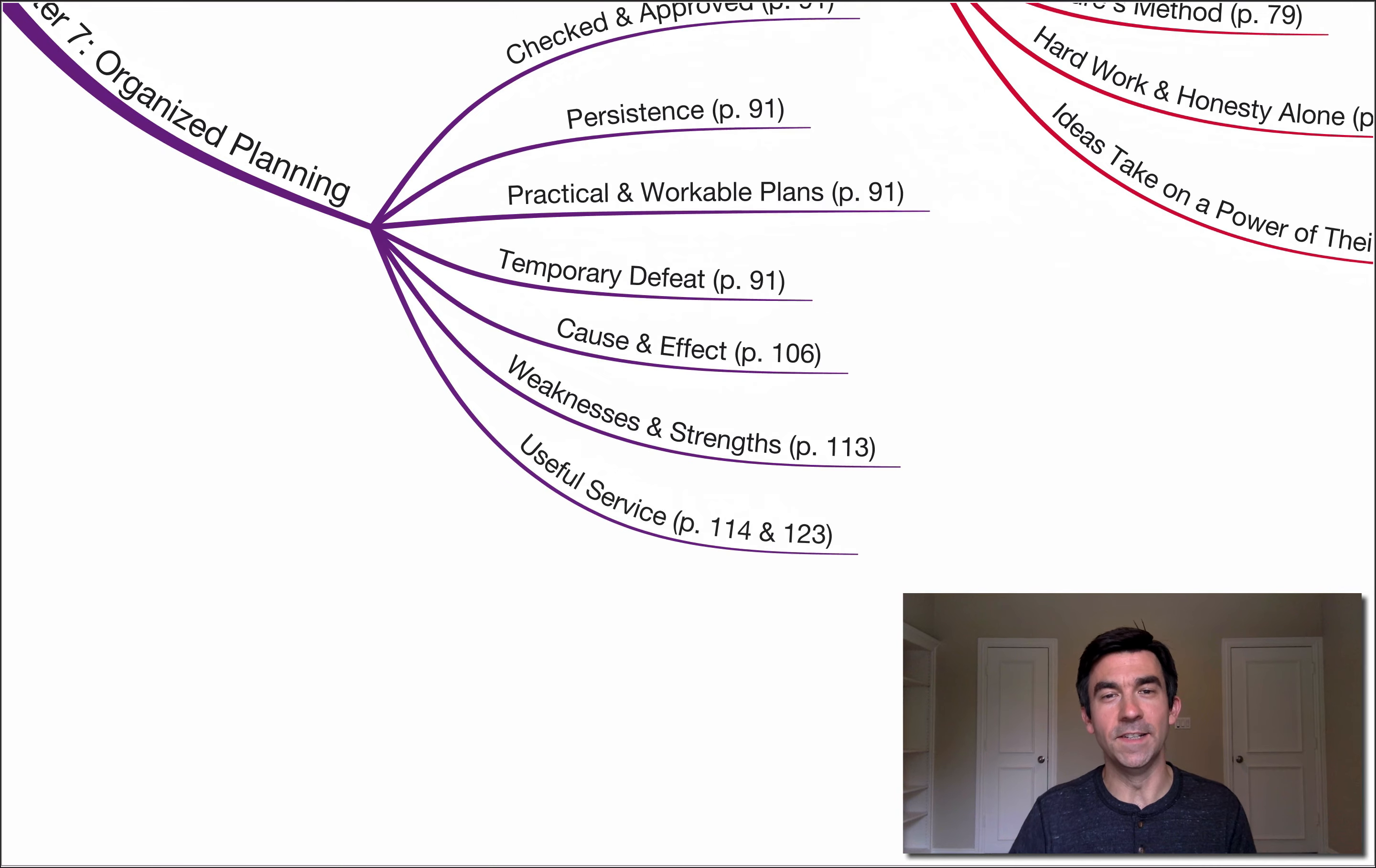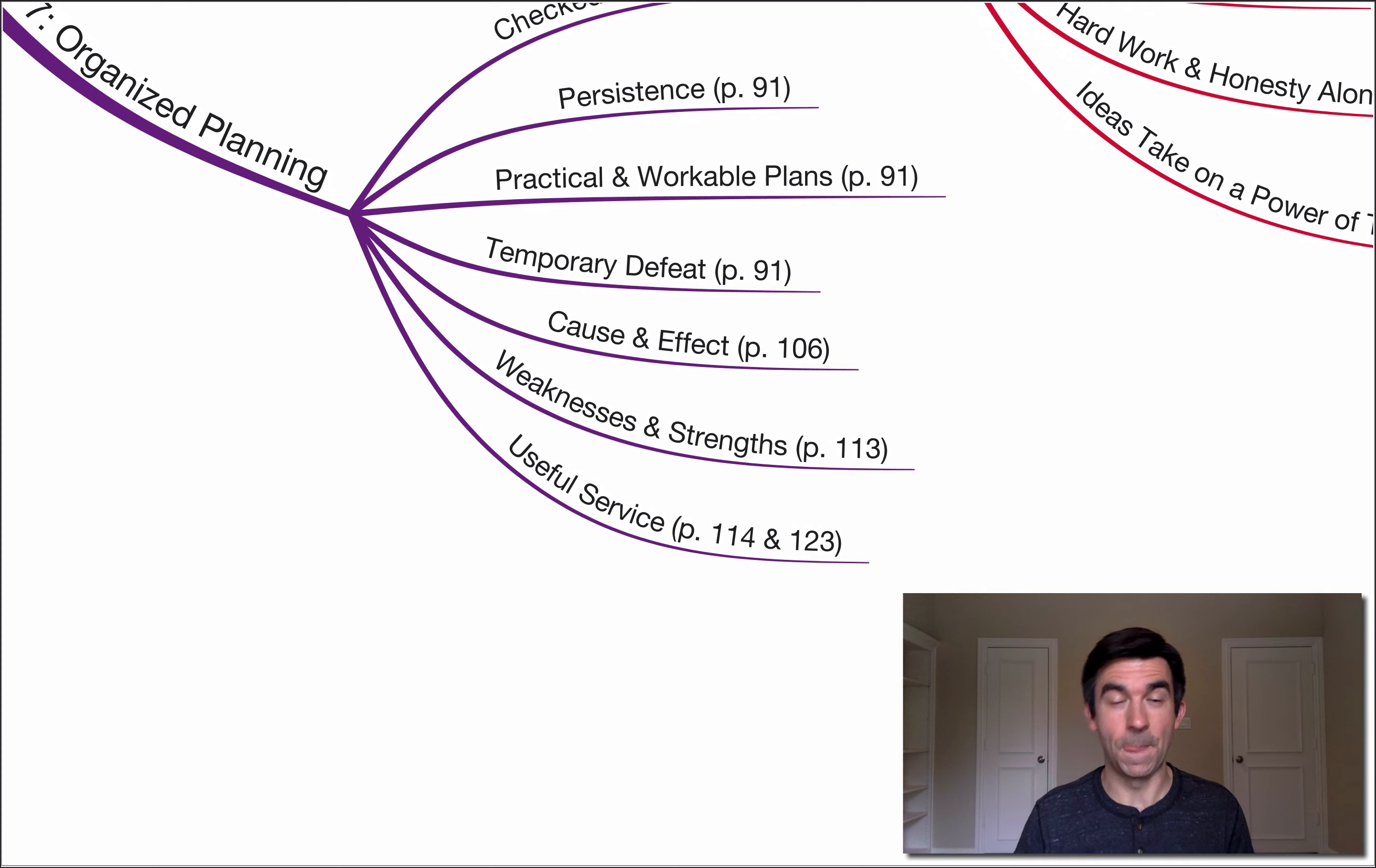Seventh key point here is useful service. I absolutely love this one. I'm on page 114 now. He says that your value is established entirely by your ability to render useful service or your capacity to induce others to render useful service. Then I'm going to jump over to page 128, I'm sorry, 123 here. Napoleon continues by saying there is but one dependable method of accumulating and legally holding riches and that is by rendering useful service.